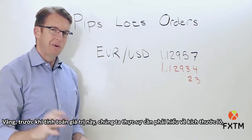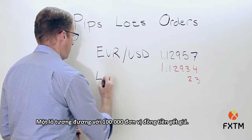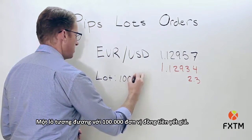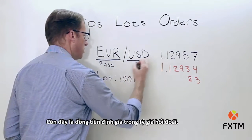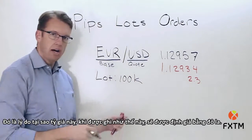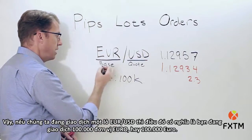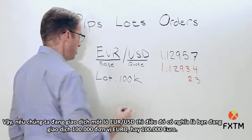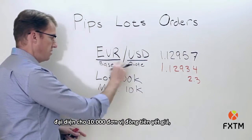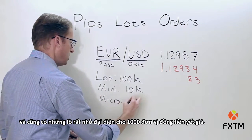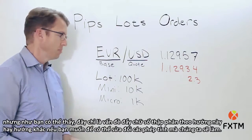Before we get into what that's worth, we need to understand lot sizes. A lot is equal to 100,000 units of the base currency. In the euro/US dollar exchange rate, the euro is the base currency and the dollar is the quote currency, so trading one lot of EUR/USD means trading 100,000 euros. There are also mini lots, which represent 10,000 units of the base currency, and micro lots, which represent 1,000 units of the base currency.